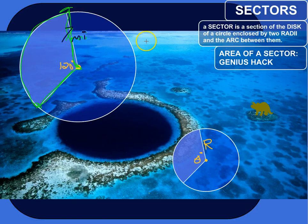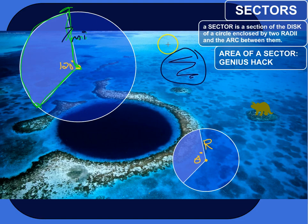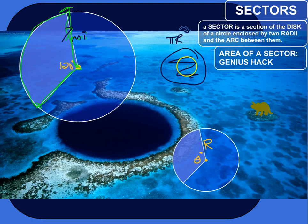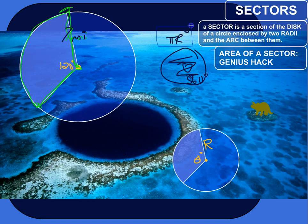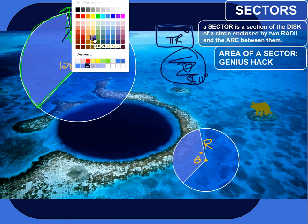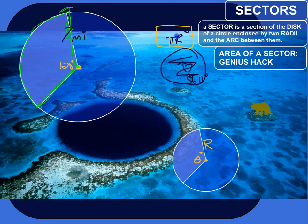The sector is part of the area of the circle. The whole area of a circle is pi times the radius squared. Now imagine, instead of a central angle of 120 degrees, our central angle were the full 360 degrees of the circle. The area of that sector would just be pi r squared — the whole area of the circle.